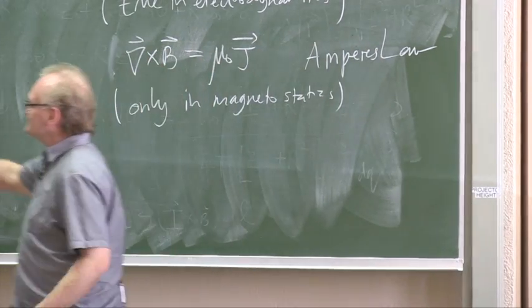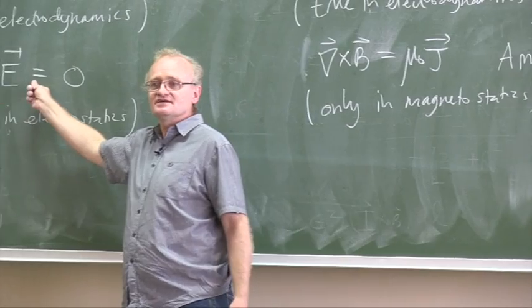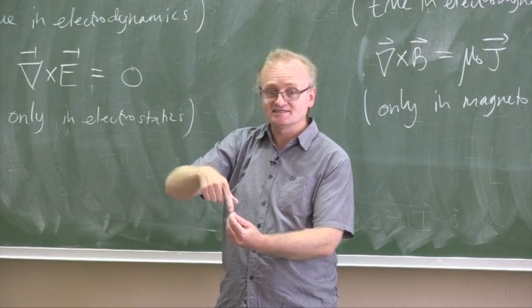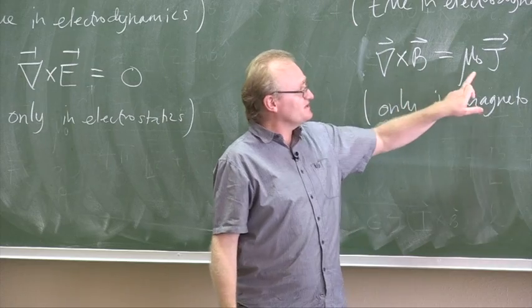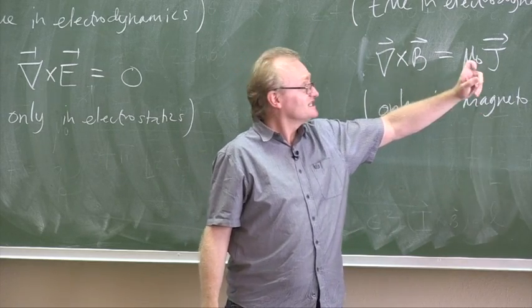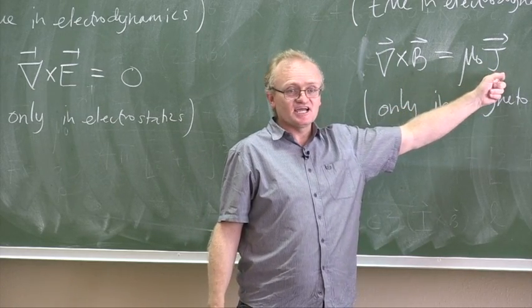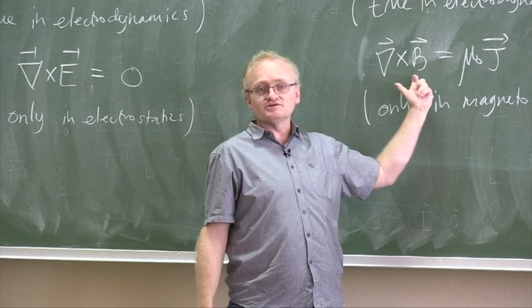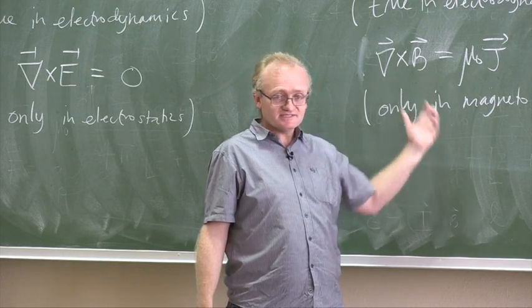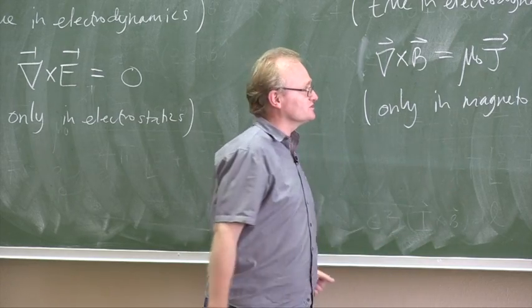The curl of E is zero. What does that tell you? There's no closed field lines. The curl of B is mu0 J. What does that tell you? Currents set up magnetic fields and all of the magnetic field lines are closed. That's telling you about the geometry of the field lines.